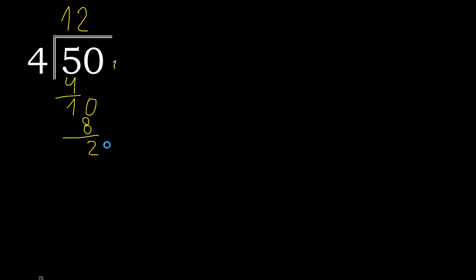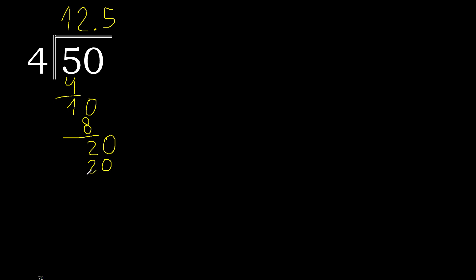That is not a whole number, therefore always complete with 0, here with a point. 0. 20. 4 multiplied by 5 is 20. It is not greater. Subtract 0. 0.